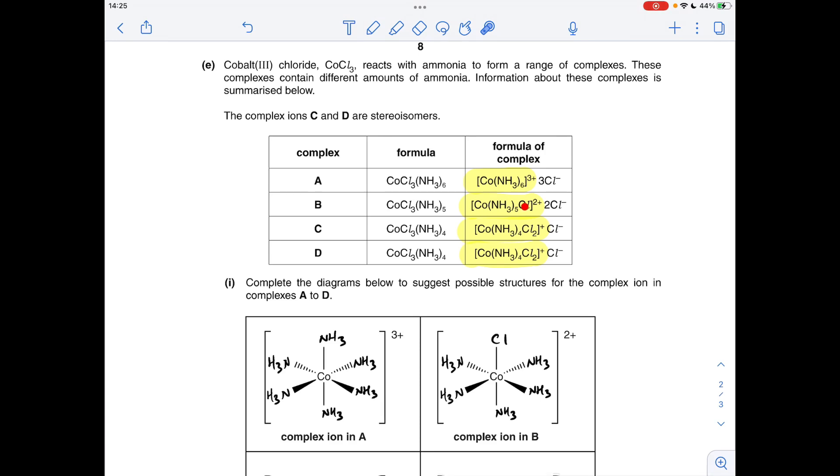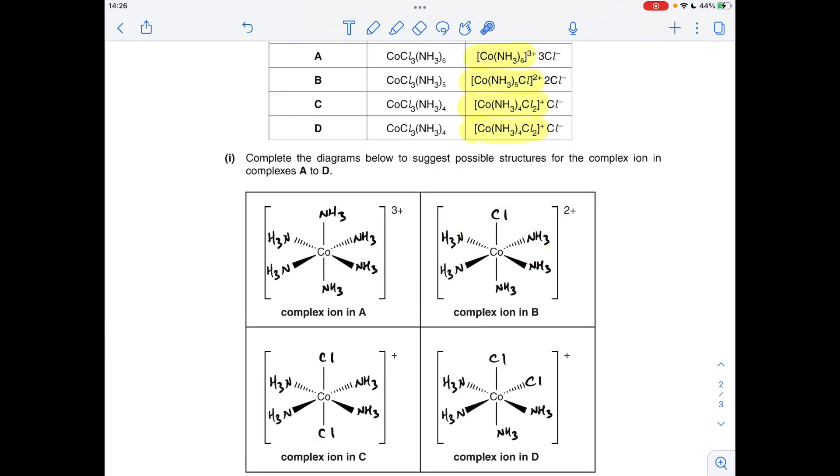Moving on to B, that's got one chloride ligand and five ammonias, so just something like that would be fine. And put the chlorine anywhere you want by the way, so long as you've just got one of them. And then if we go to C and D, you'll notice they've got the same formula, so four ammonias, two chlorides. So what they're after here is your cis and trans versions.